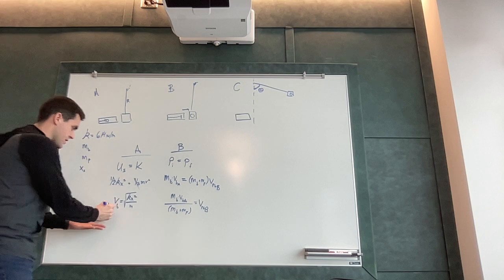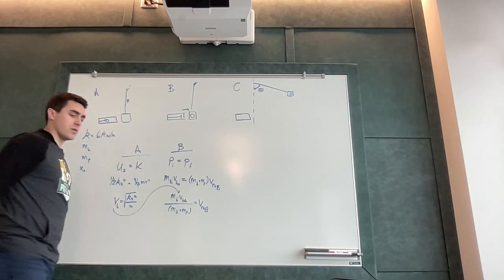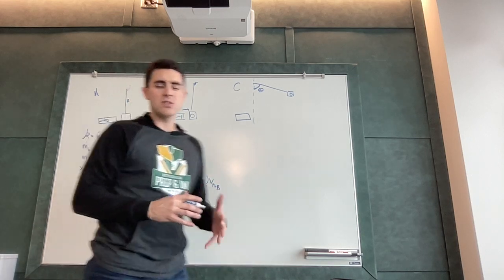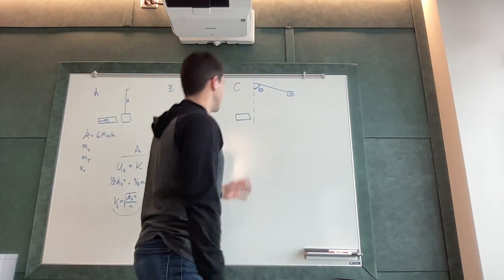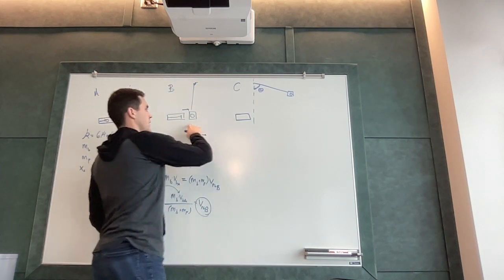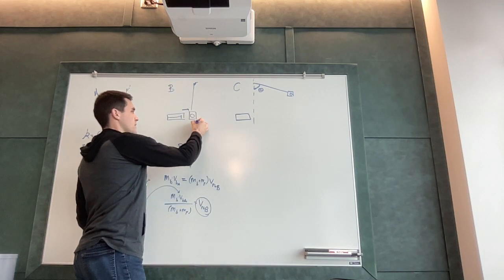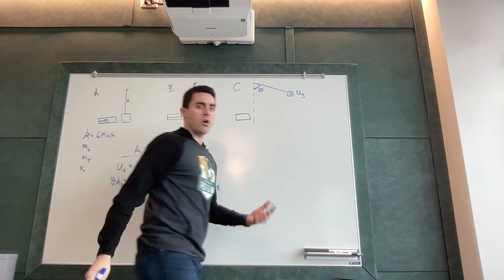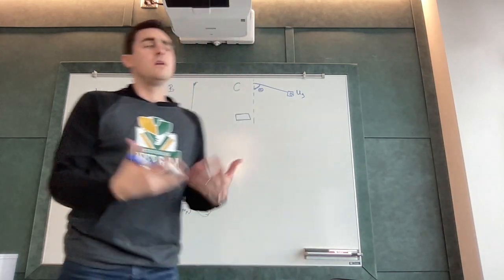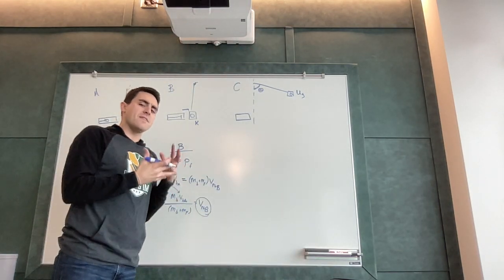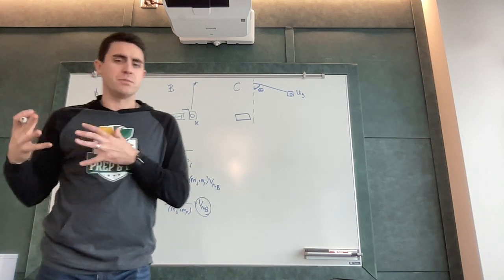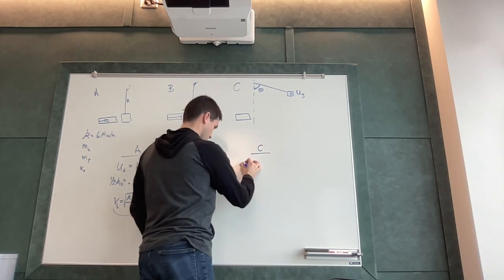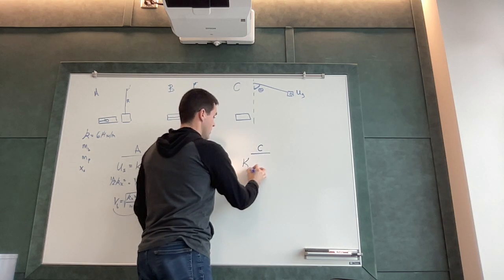That's all equal to the velocity of the pendulum ball system at point B. So, I've carried this variable over, used it over here, and now I'm going to need to carry this variable over into part C. Part C is where it gets a little bit confusing, but essentially what I see here is this object swings up. It's moving down here with a lot of kinetic energy, and it swings up.